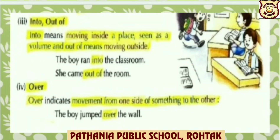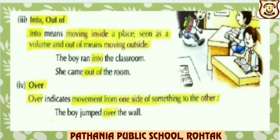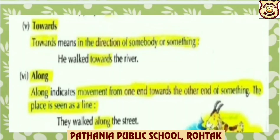Over indicates movement from one side of something to the other. For example: The boy jumped over the wall — that means from one side of the wall to the other side. Next, towards — towards means in the direction of somebody or something. For example: He walked towards the river, that means in the direction where the river is.